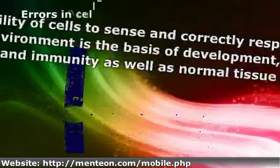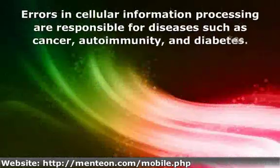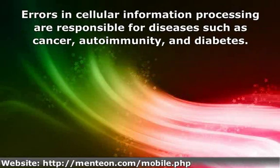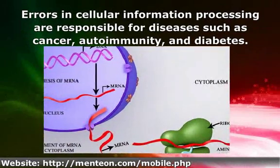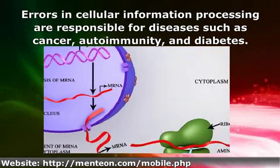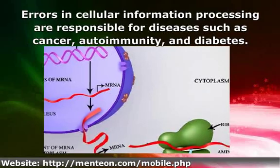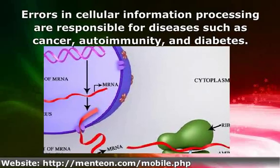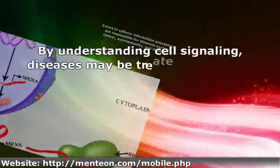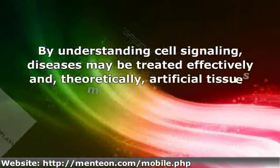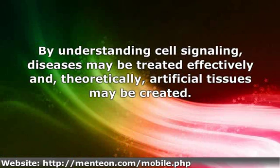Errors in cellular information processing are responsible for diseases such as cancer, autoimmunity, and diabetes. By understanding cell signaling, diseases may be treated effectively and, theoretically, artificial tissues may be created.